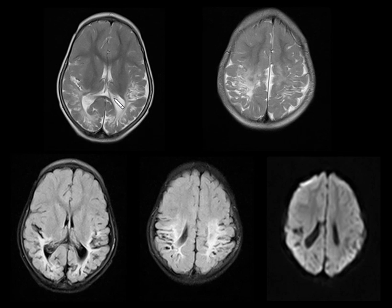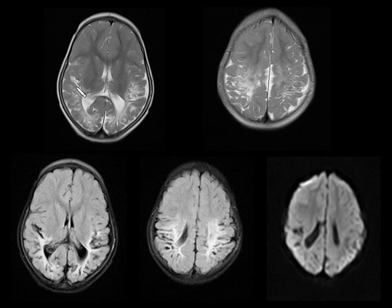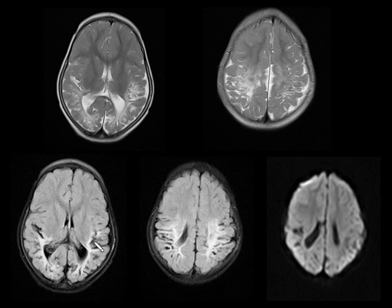Coming to the next case — a child with perinatal history of hypoxia and delayed cry after birth. You can see symmetrical hyperintensities in the periventricular location in the peritrigonooccipital lobes with mild asymmetrical dilatation of the atria of the lateral ventricles. These are gliosis in the periventricular location — periventricular leukomalacia in a case of HIE (hypoxic ischemic encephalopathy).